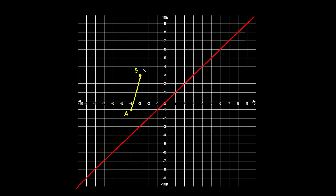Now if we want to reflect a line across the line of reflection, the steps are the same — the only difference is we reflect two points, point A and point B. Point A is one and a half diagonal spaces from the line, so A prime is one and a half spaces on the other side. Point B is three diagonal spaces away, so B prime is three spaces away. Then you draw a straight line from A prime to B prime. The lines from A to A prime and from B to B prime each make a perpendicular angle with the line of reflection.